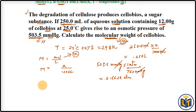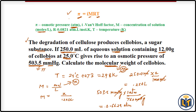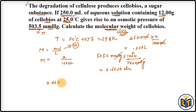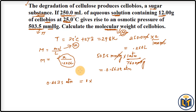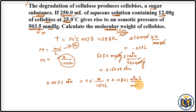Now we plug the values into the formula π = iMRT. We have π = 0.6625 ATM, i = 1 (since cellobiose is a non-electrolyte), M = X / 0.250 L, R = 0.0821 ATM·L/mol·K, and T = 298 K. Units cancel: Kelvin cancels, ATM cancels, and liters cancel, leaving X in moles.